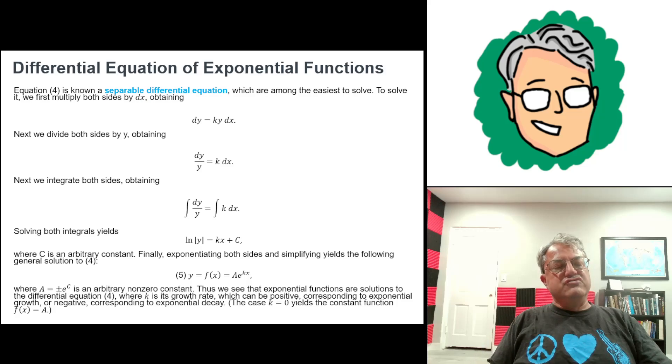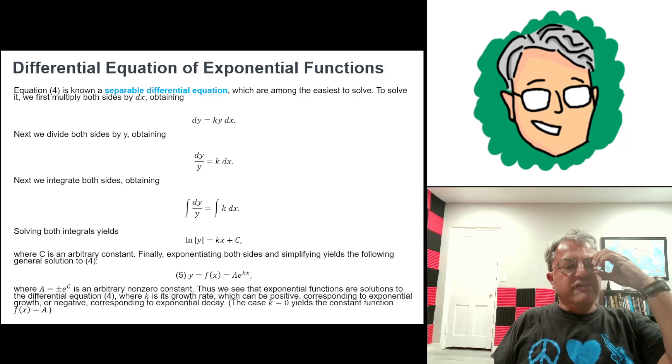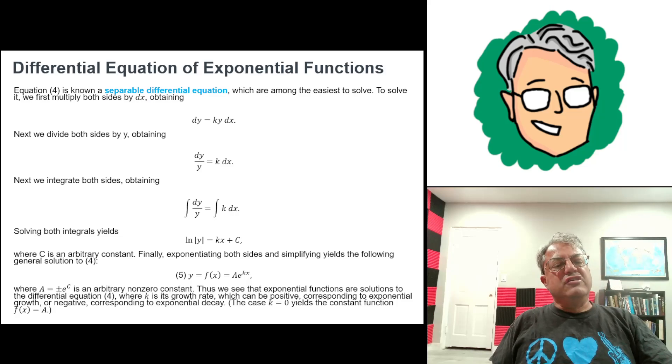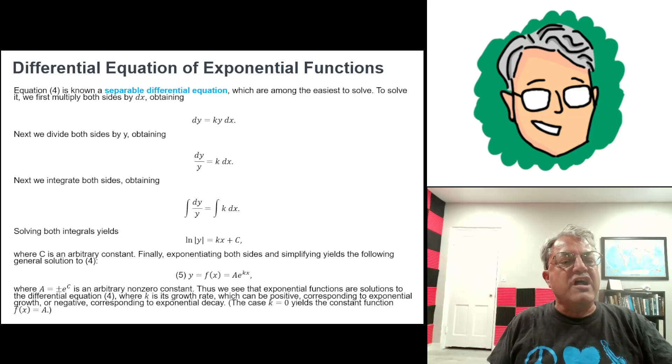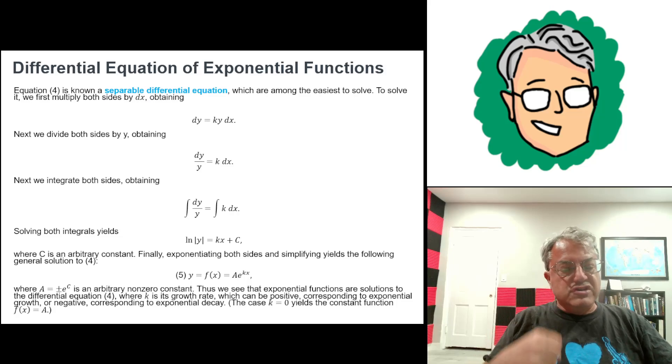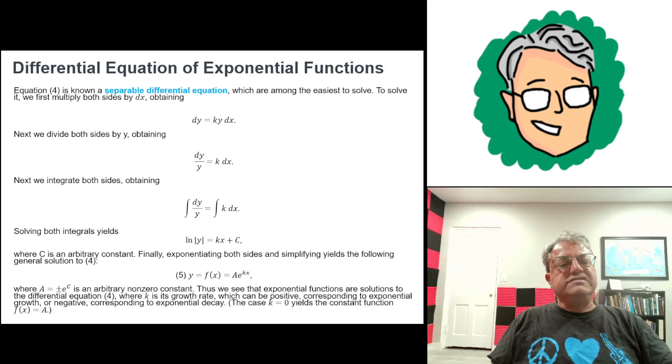So now all we have to do is exponentiate both sides. And when we do that, we get e to the ln y, that's just y, equals, and that's also f(x), and that's equal to ae^(kx), where a is now e^c. So that's a new integration constant. It's a positive constant.